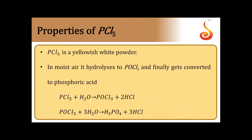Now coming towards the properties of PCl5. PCl5 is a yellowish white powder. It also hydrolyzes in the presence of moisture and finally gives us phosphoric acid, but first it forms POCl3 and then changes into phosphoric acid. Here also the oxidation number remains constant — the +5 state of phosphorus in PCl5 remains the same after the hydrolysis reaction. Similar to PCl3, PCl5 also hydrolyzes and the oxidation number remains constant throughout.